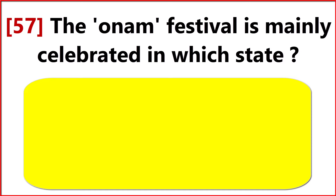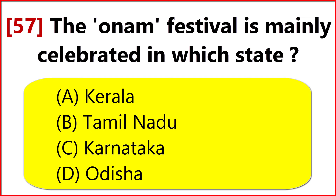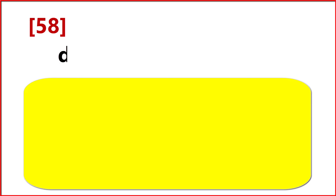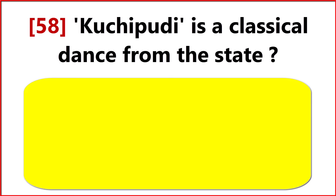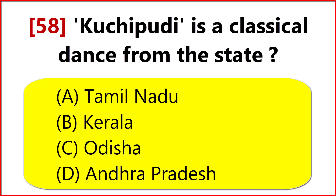The Onam festival is mainly celebrated in which state? Option A: Kerala. Kuchipudi is a classical dance from which state? Option D: Andhra Pradesh.